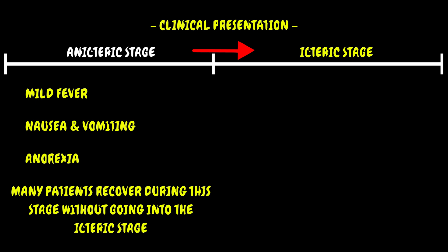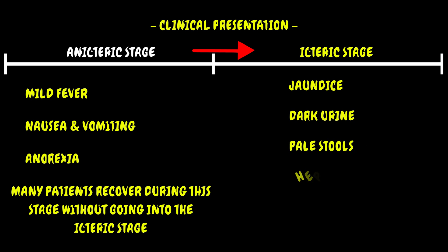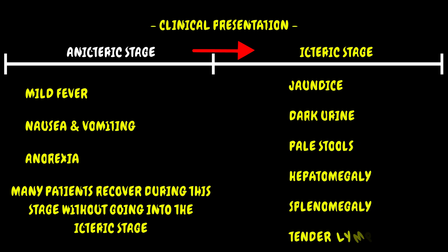During the icteric stage, the patient develops jaundice, and as jaundice deepens, patients develop dark urine, pale stools, hepatomegaly, splenomegaly, tender lymphadenopathy, and a transient rash in some.